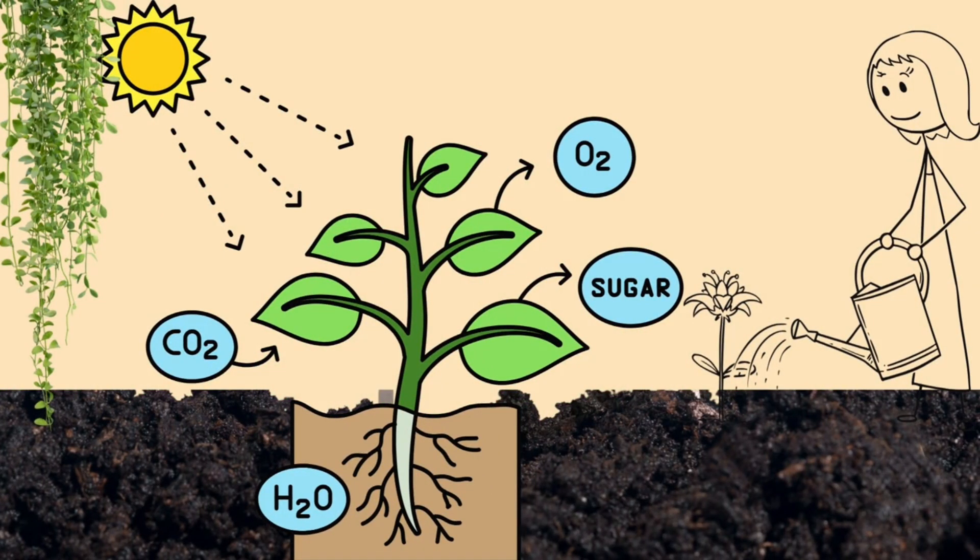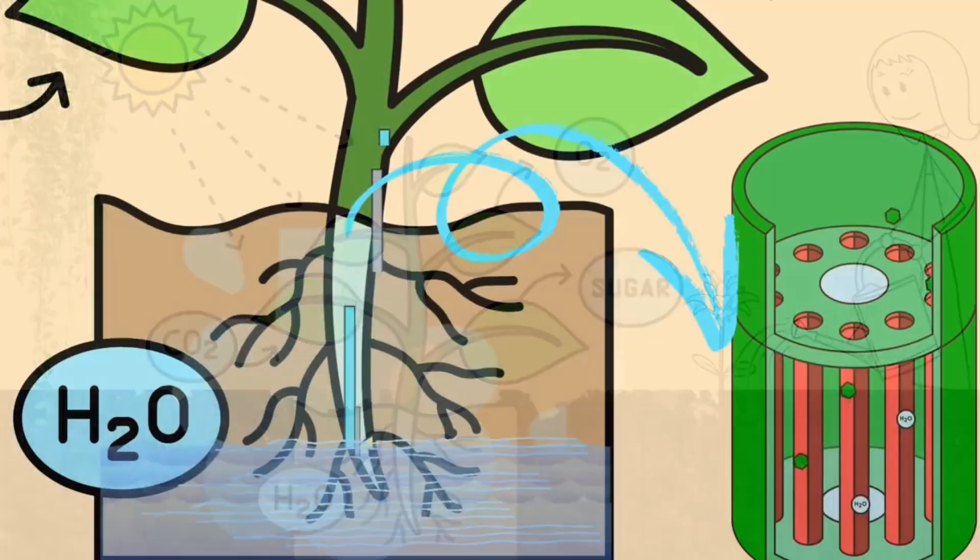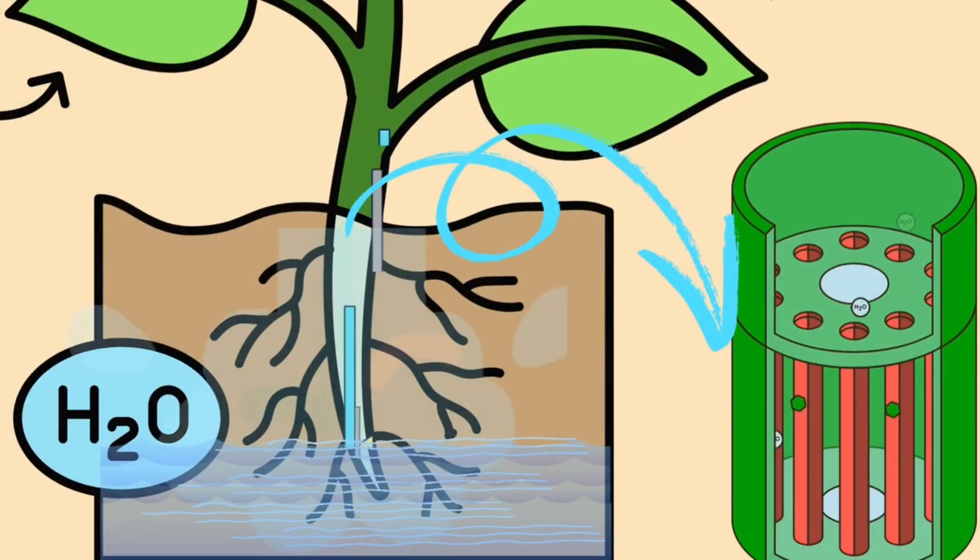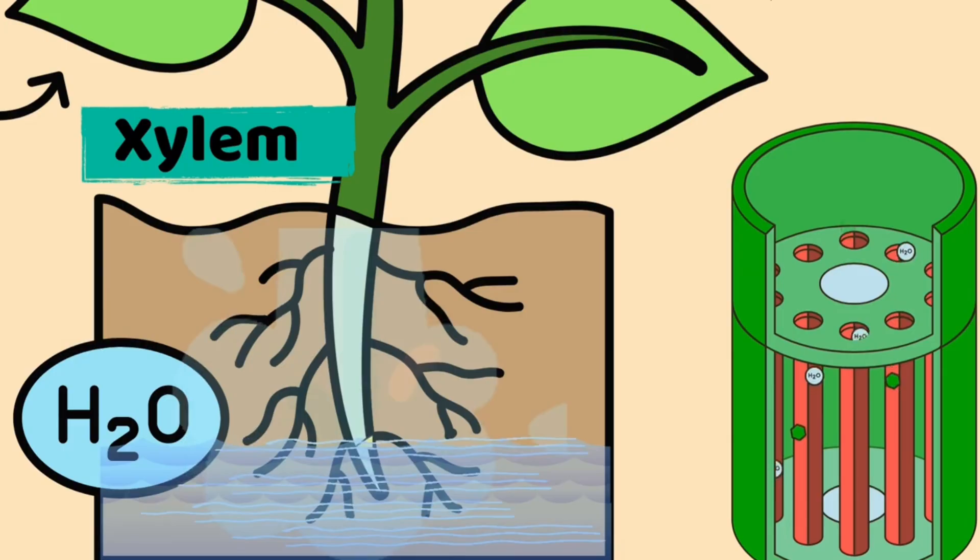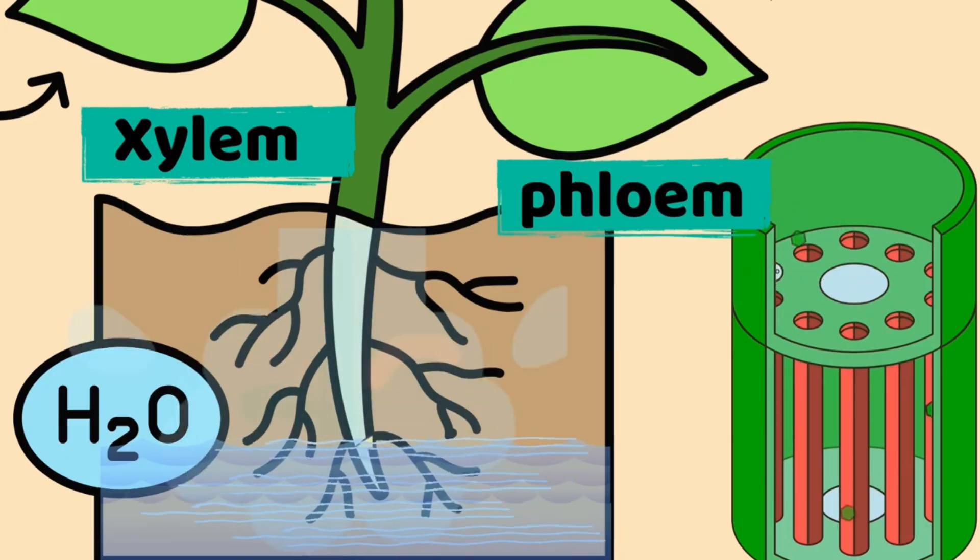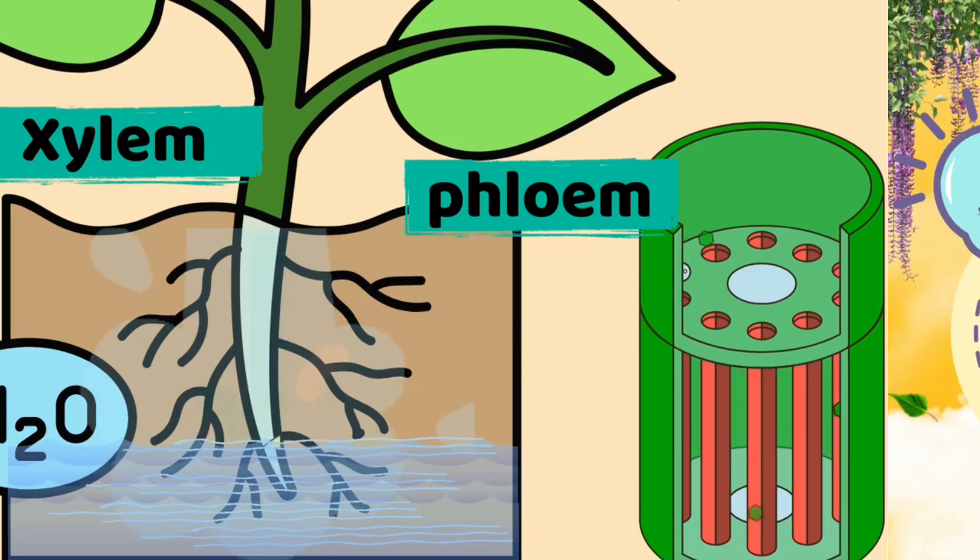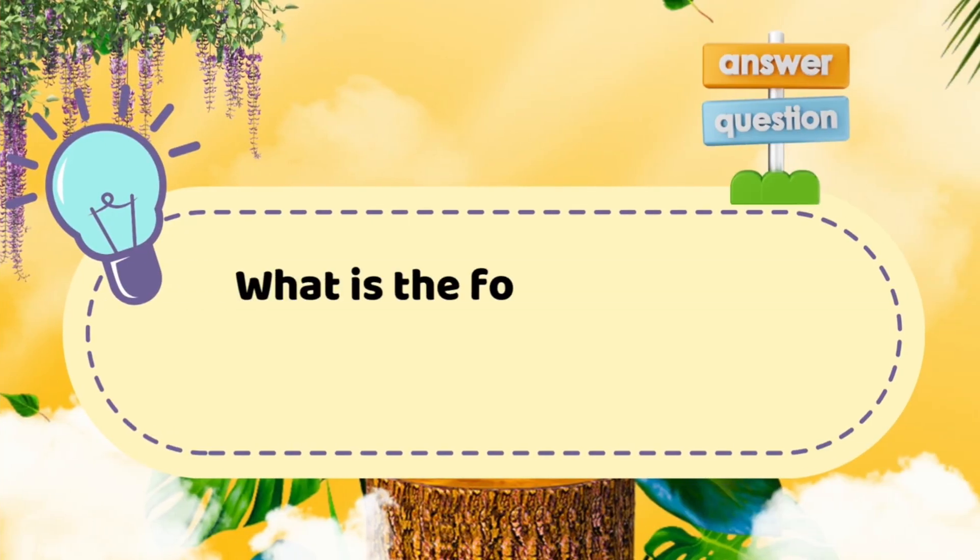Do you know, inside these veins are tiny tubes. One is called xylem, it carries water and minerals up to the leaves. And another is called phloem, it carries food to the whole plant. So next time you can even say xylem and phloem like a real scientist.